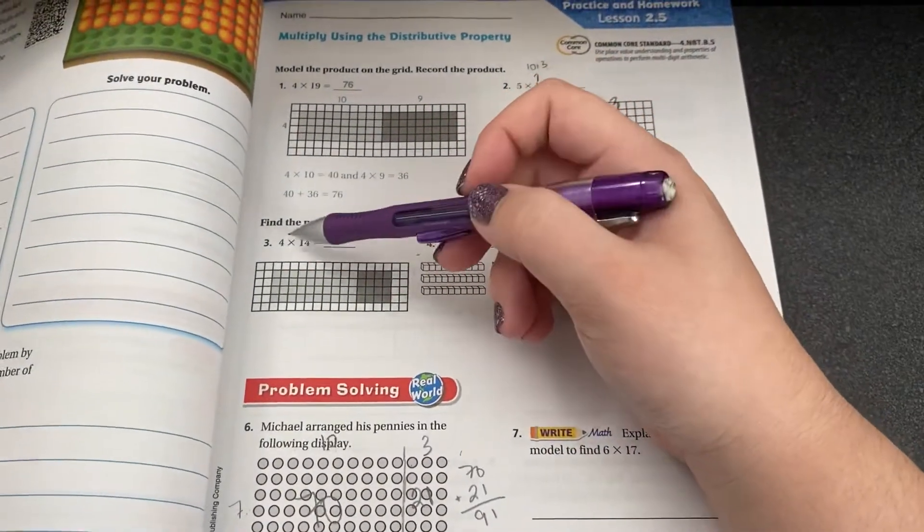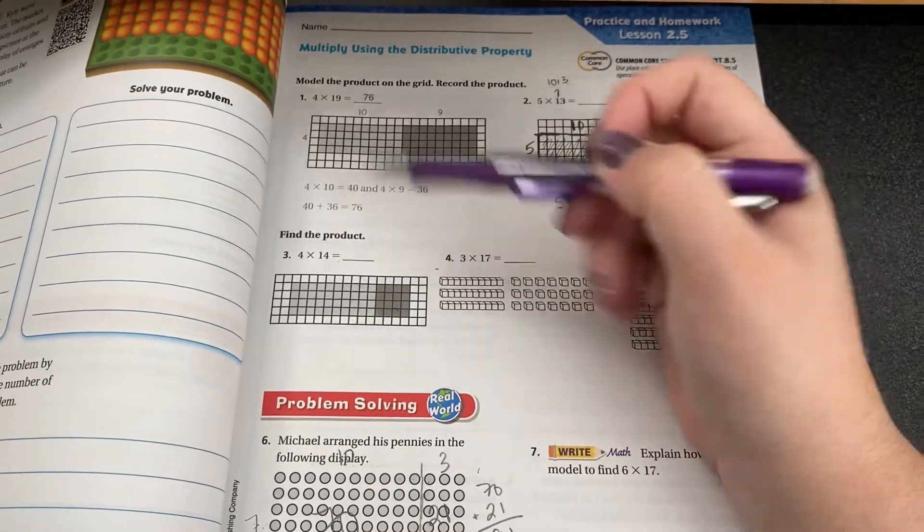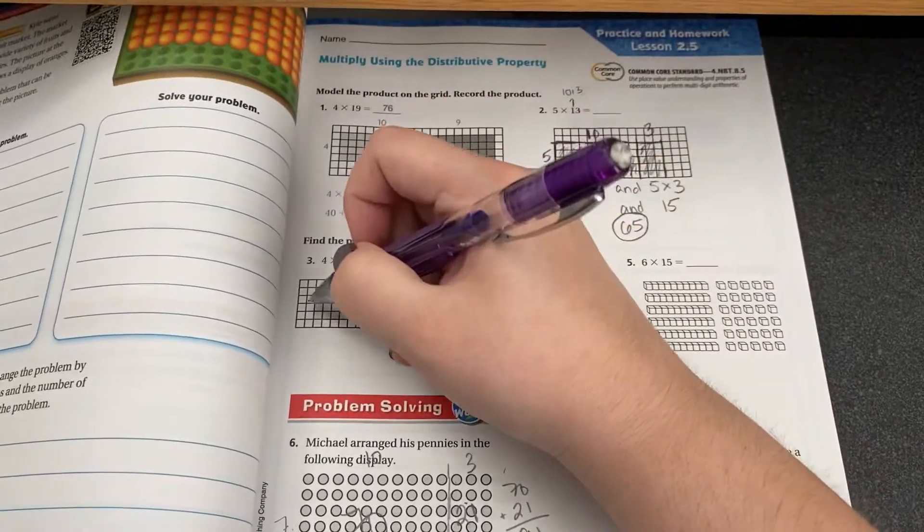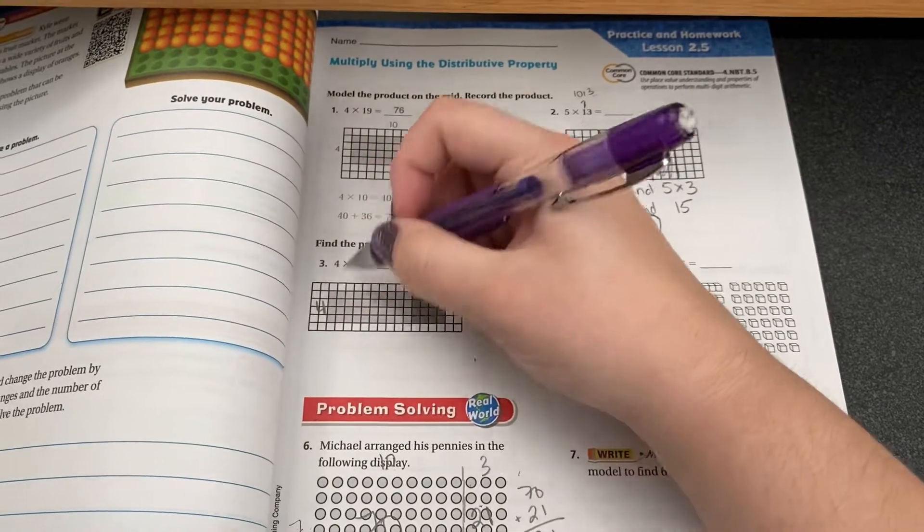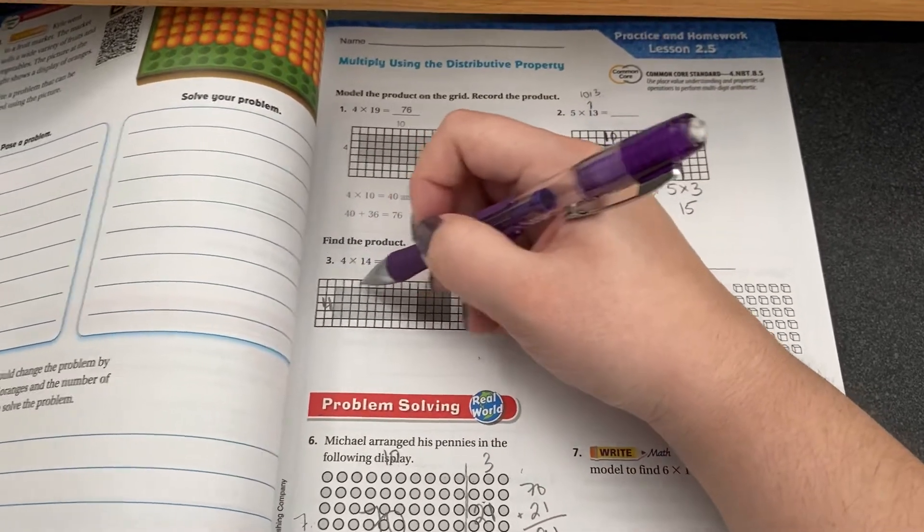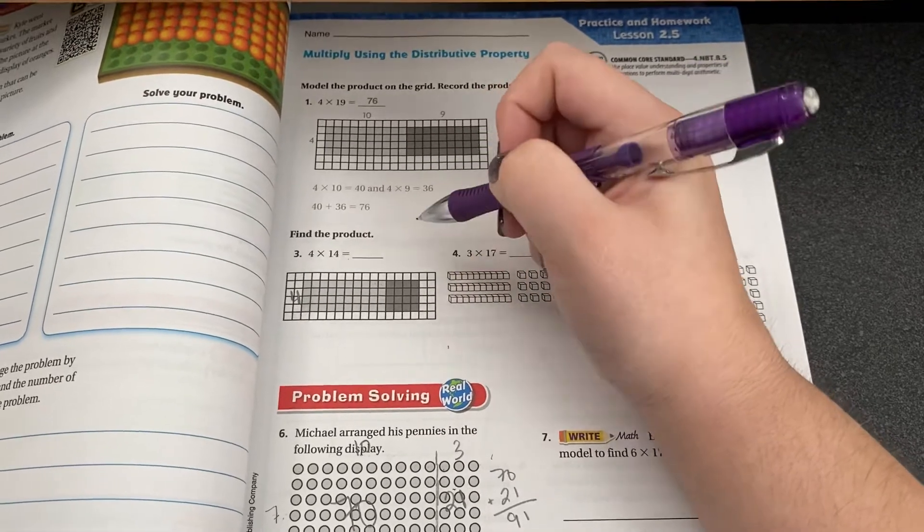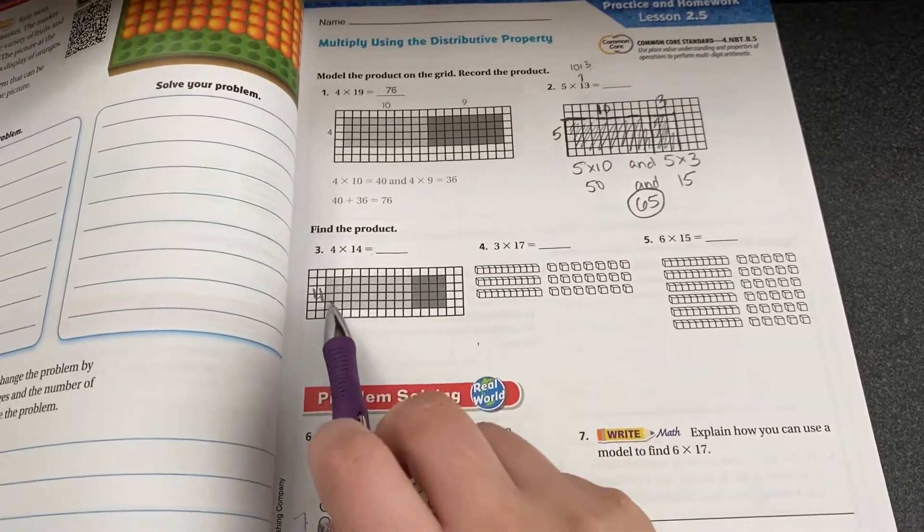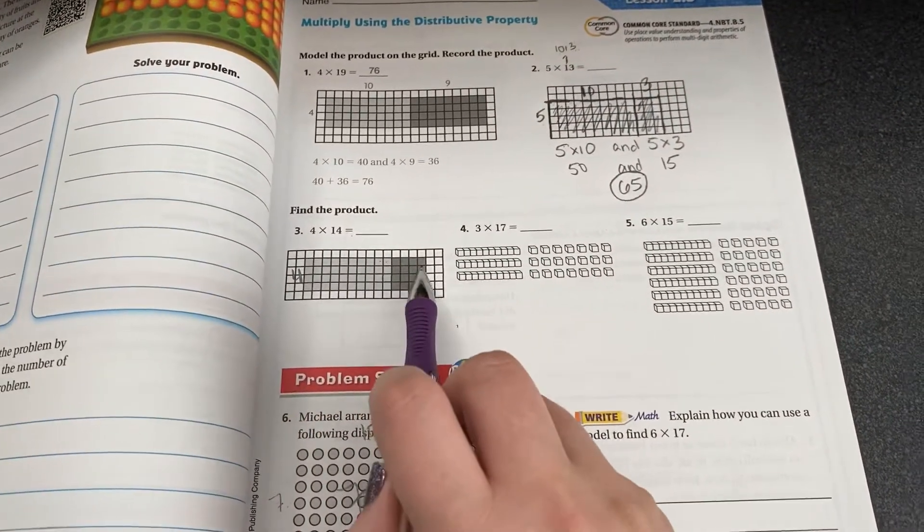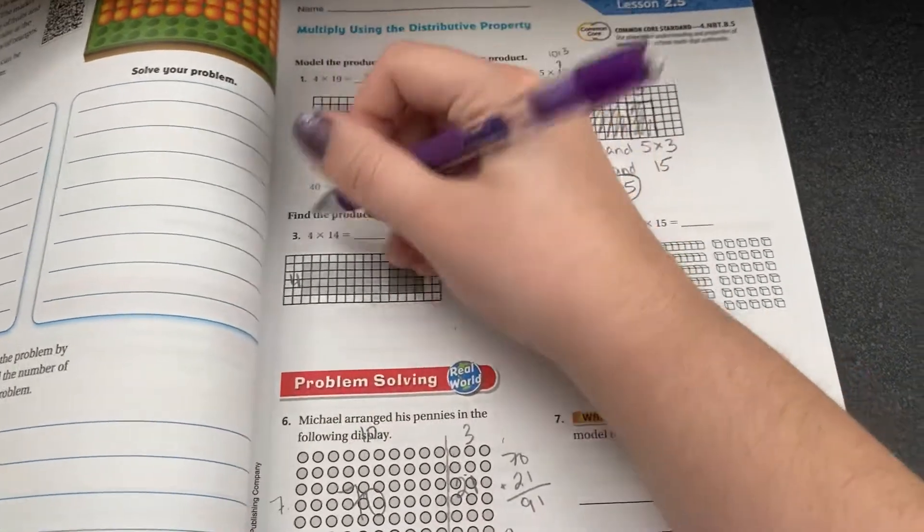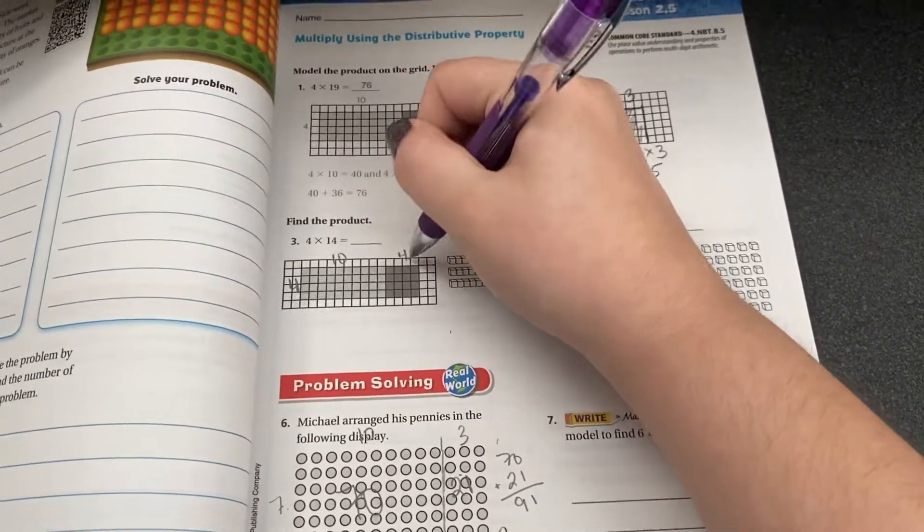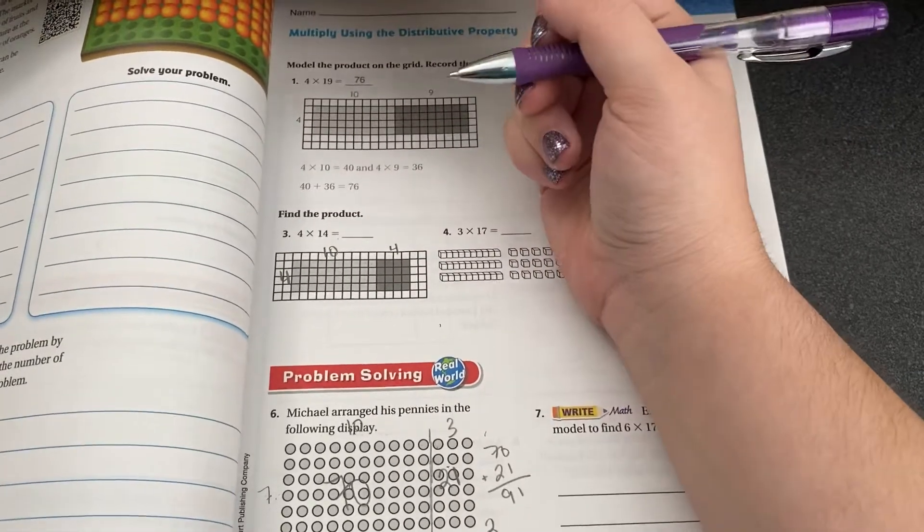So if I've got this one right here, it says four times fourteen. They already drew it for me. So I've got four groups of fourteen across. One, two, three, four, five, six, seven, eight, nine, ten, eleven, twelve, thirteen, fourteen. But they split it up into a group of ten and a group of four. You see how these ones are darker? So ten and four, which if we put ten and four back together, we get fourteen.